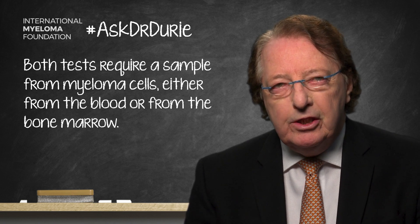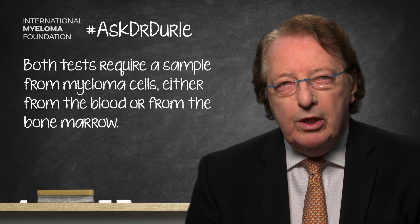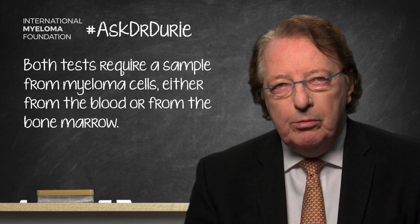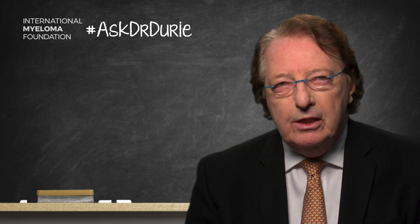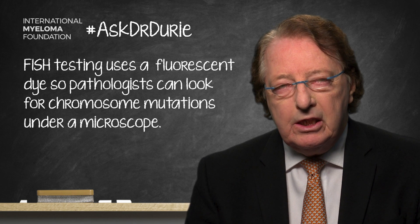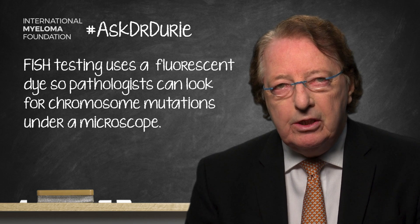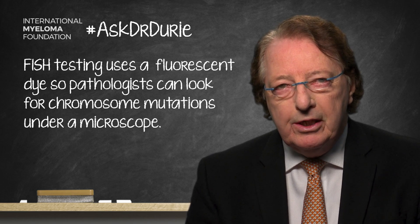In the case of FISH testing, what is done is that the chromosomes of the cells are stained with a fluorescent dye. This makes the chromosomes light up in different colors, so that when a pathologist looks at the chromosomes under a microscope, he can distinguish which chromosomes are present and if there are any mutations or changes within the chromosomes.